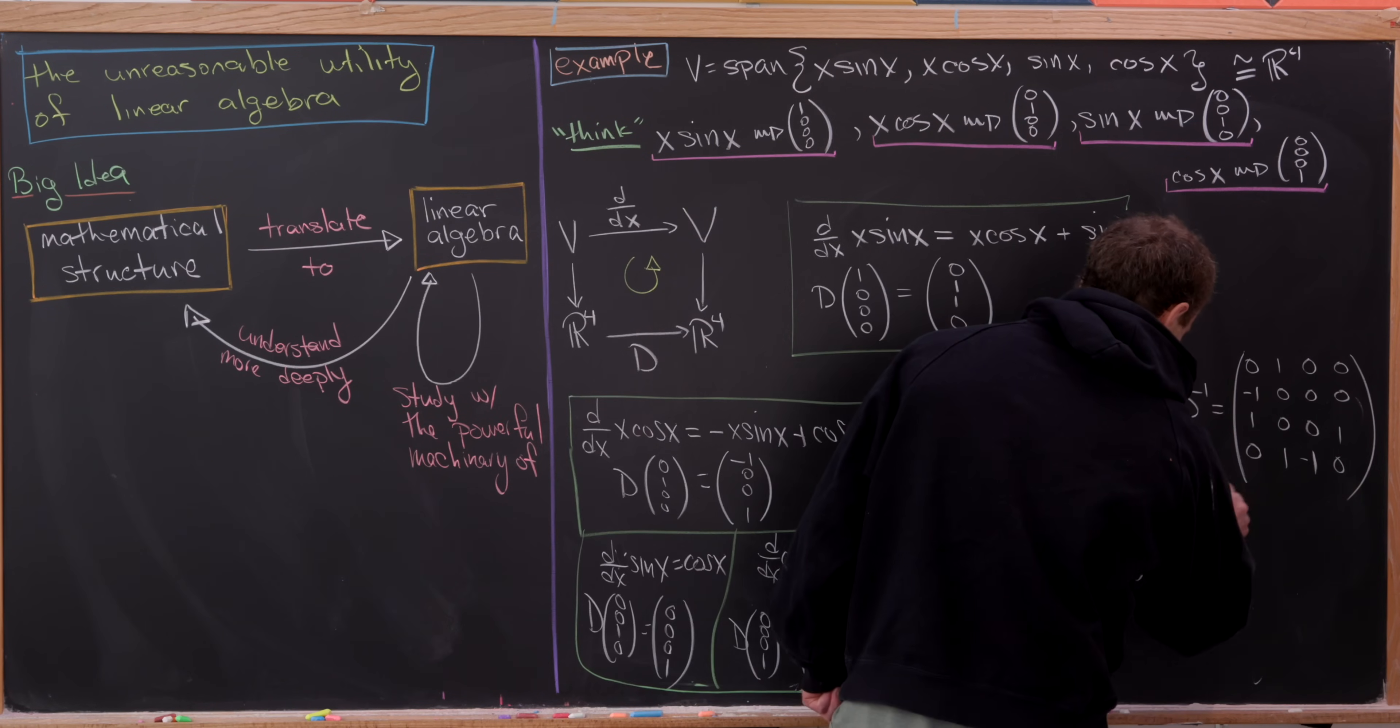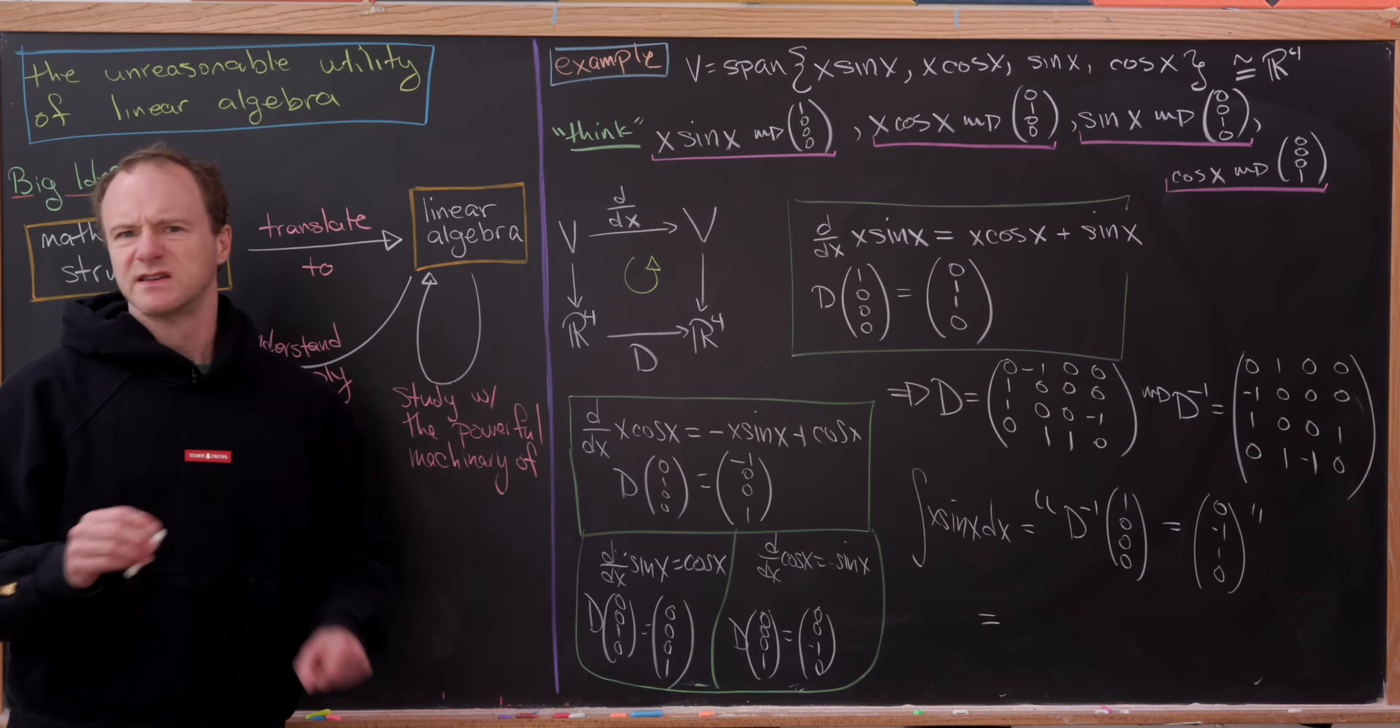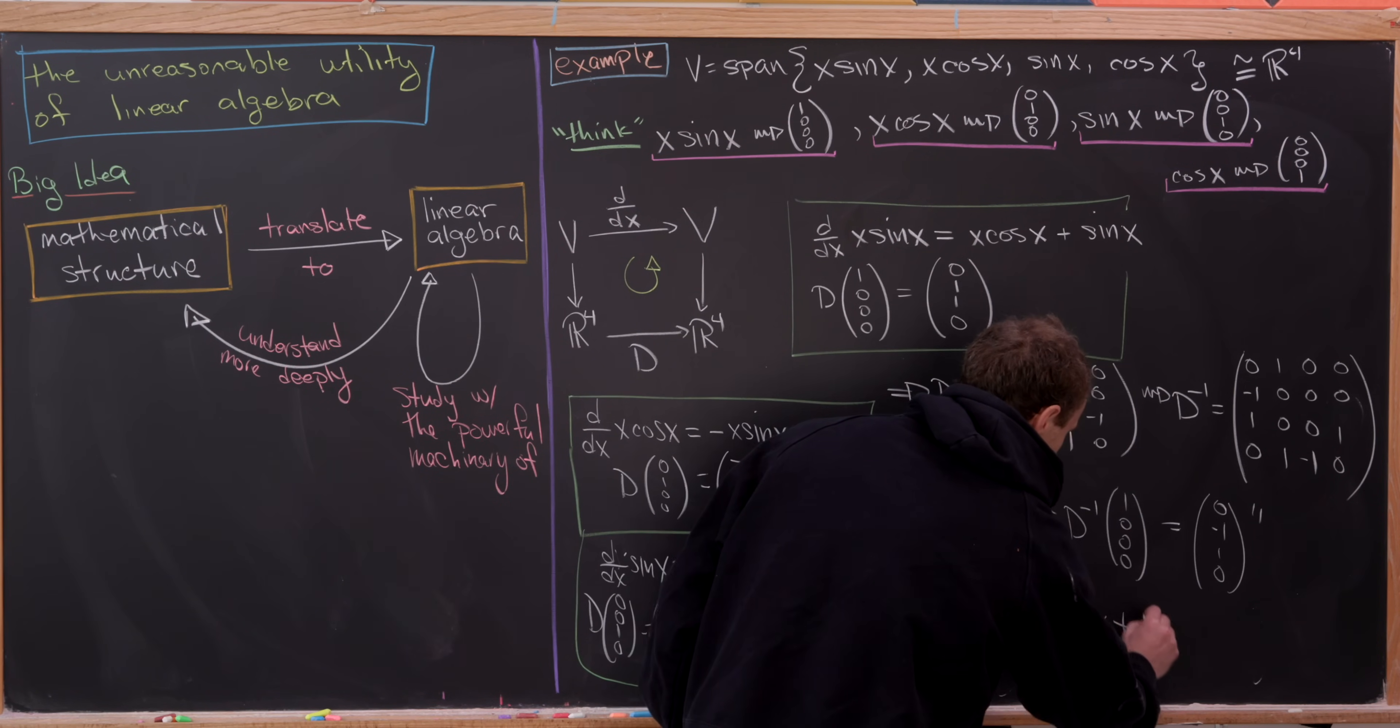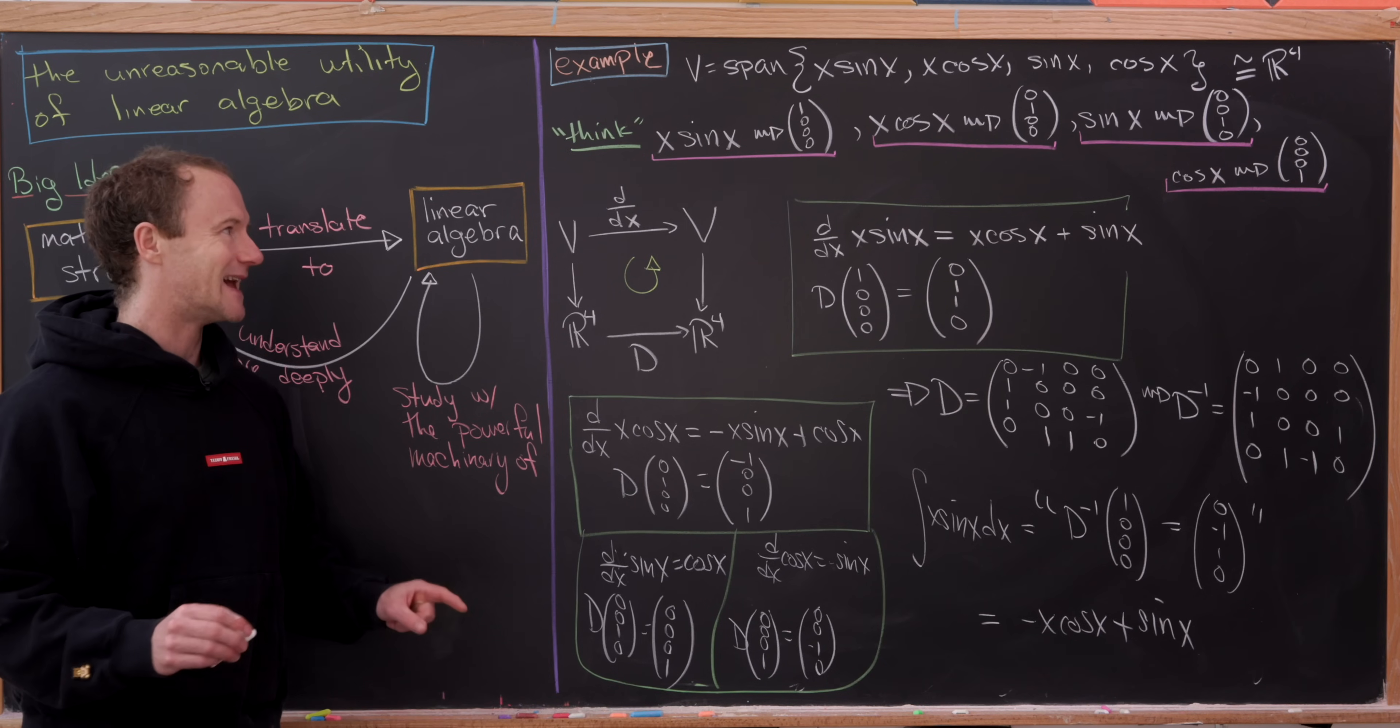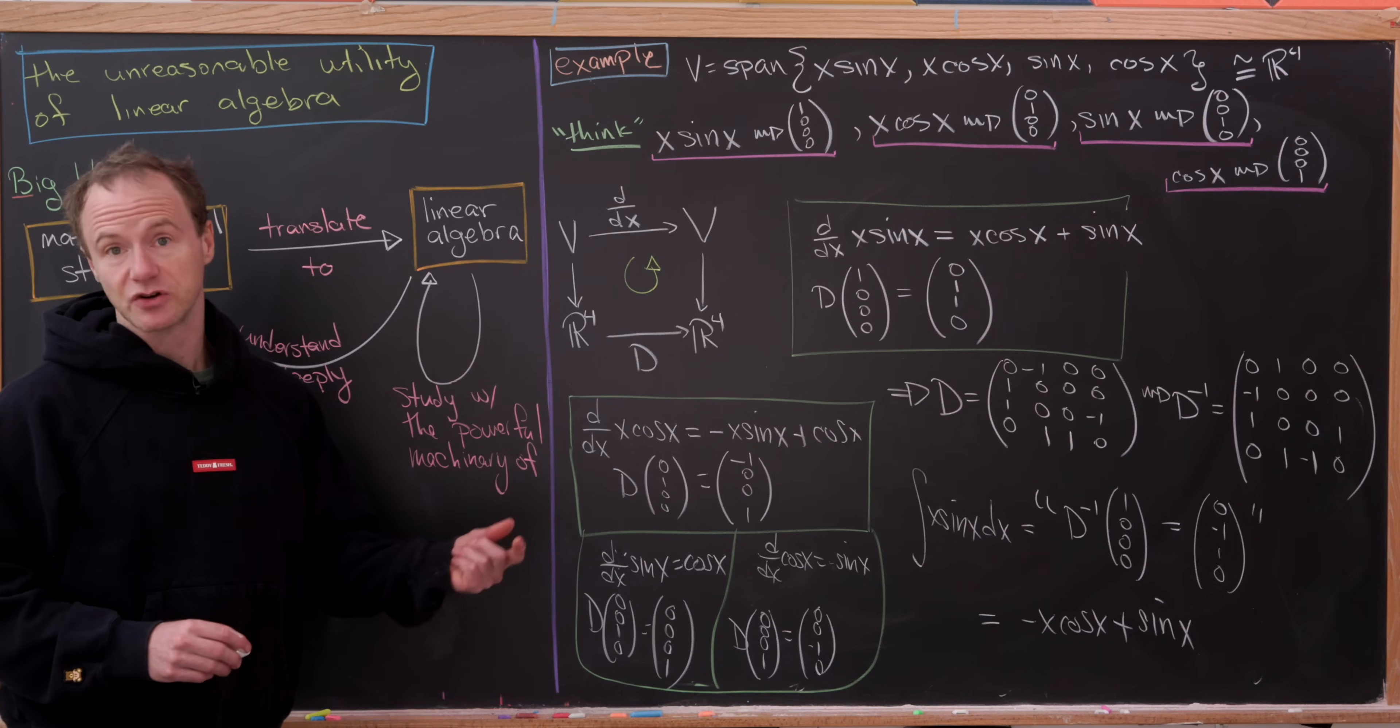So you can do the matrix multiplication, and you'll see that this is equal to 0, negative 1, 1, 0. But then putting that back into terms of our sine x, cosine x, x sine x, and so on and so forth, we'll see that we get minus x cos x plus sine of x. Which, of course, we're missing the plus a constant, but that's because that's not encoded into this linear algebra setup here. But that is, in fact, the antiderivative that you would get by doing the integration by parts here.